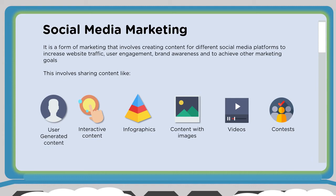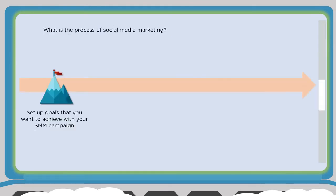Sharing content allows you to generate user-generated content or create interactive content. You can use infographics, apply content with imagery, post videos, or do interactive things like polling and contests. There's a lot of flexibility in terms of the content you can share on social media. You want to establish a process for social media marketing.